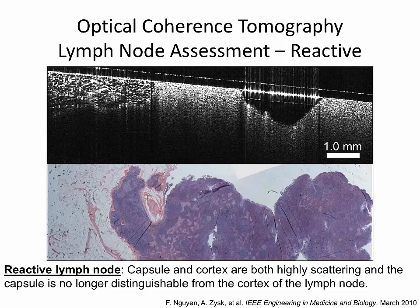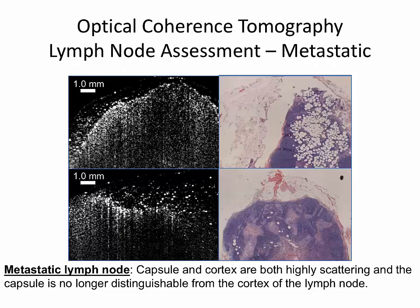With the normal lymph node on the clinical system, we see a very distinct capsule and very low scatterers beneath it corresponding to the cortex. Moving to a reactive lymph node, we no longer see that difference — hypercellularity is happening, increased cells, increased nuclear-to-cytoplasmic ratio, and the capsule is physically constricting space since it can't just keep growing. We see the same thing in the case of metastatic lymph nodes — we can't differentiate between the capsule and cortex anymore.